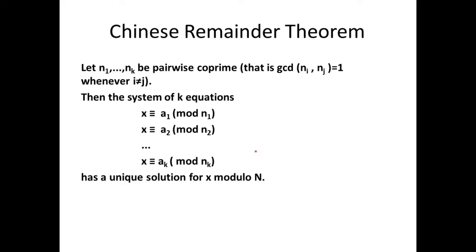In this session we will be looking at the Chinese Remainder Theorem. What this theorem says is: if you have a system of k equations given like this — x is congruent to a1 mod n1, where a1 is the remainder we get when we divide x by n1 — and like that we have a system of k equations up till x is congruent to ak mod nk. The important condition is that any two numbers n_i and n_j must be co-prime or relatively prime numbers.